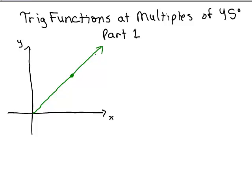You could pick any point on here — 1,1 or 1.5,1.5 or 2,2 et cetera. I'm going to choose the ordered pair 1,1; it's the simplest one. The radius is just the square root of 1 squared plus 1 squared, which is the square root of 2.